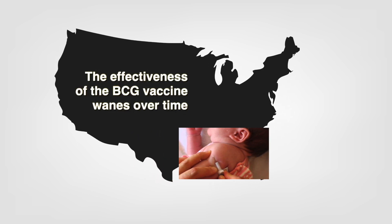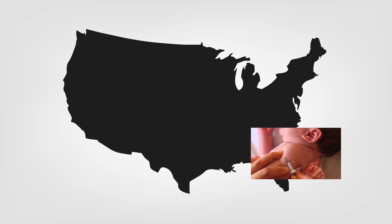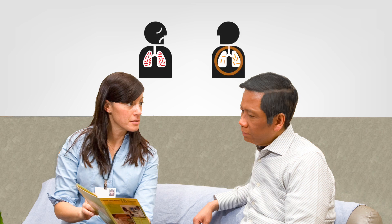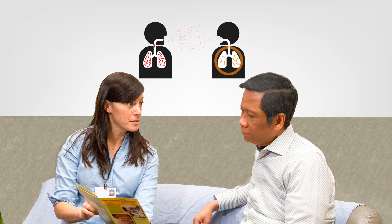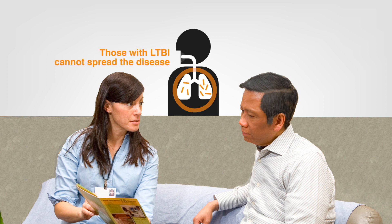However, its effectiveness wanes over time. Be sure to explain that a history of BCG vaccination is not a reason to forego testing for TB infection. Clearly explain the difference between LTBI and TB disease and the risk factors for acquiring TB infection and developing disease when you are assessing people for risk of TB infection. There is often stigma and shame associated with TB, especially among people from countries where TB is endemic, so you should clearly describe how TB is spread and that anyone can get TB. Emphasize that those with LTBI cannot spread the disease to others. Explain the person's specific risk factors for infection or progression and that by getting tested for LTBI and taking treatment if infected, people can protect themselves, their families, and their communities.